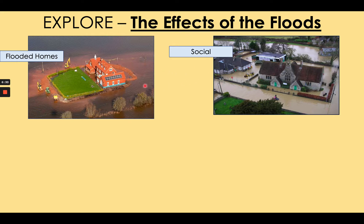Children in the area were unable to get to school — this is an example of a social effect. A number of schools in Somerset were flooded and the roads connecting to them were also flooded. The long-term consequence was an effect on education: children fell behind by several months and had to catch up in order to achieve similar grades as expected.